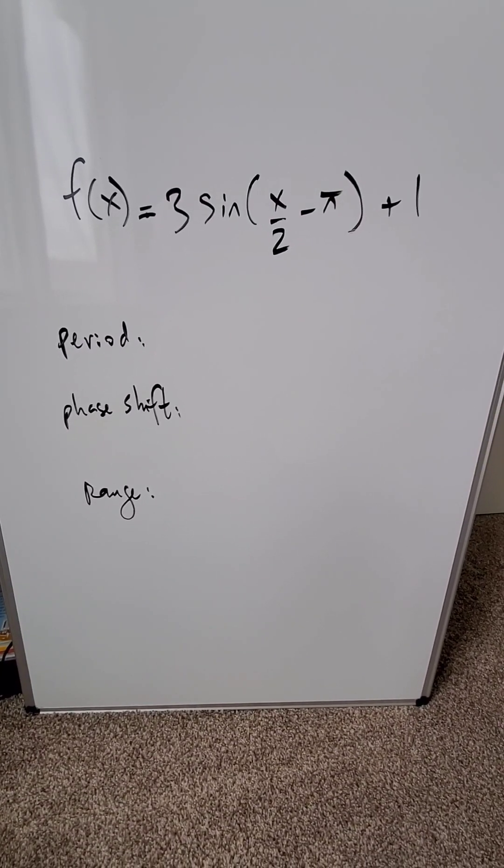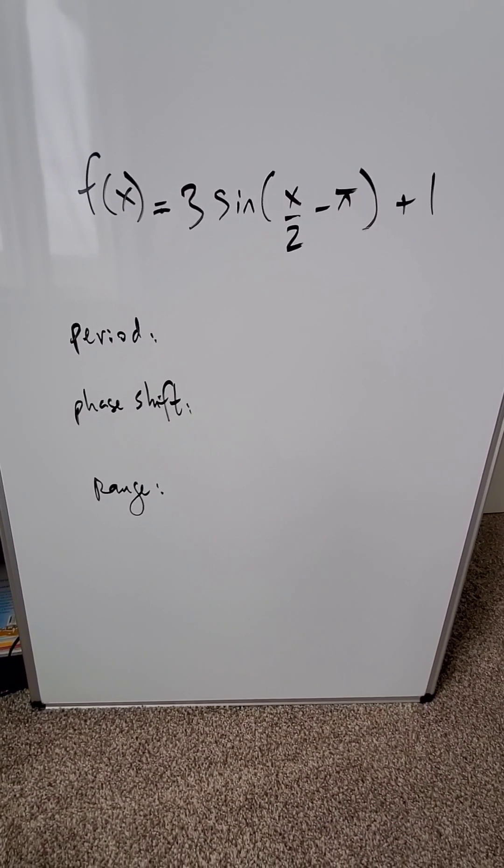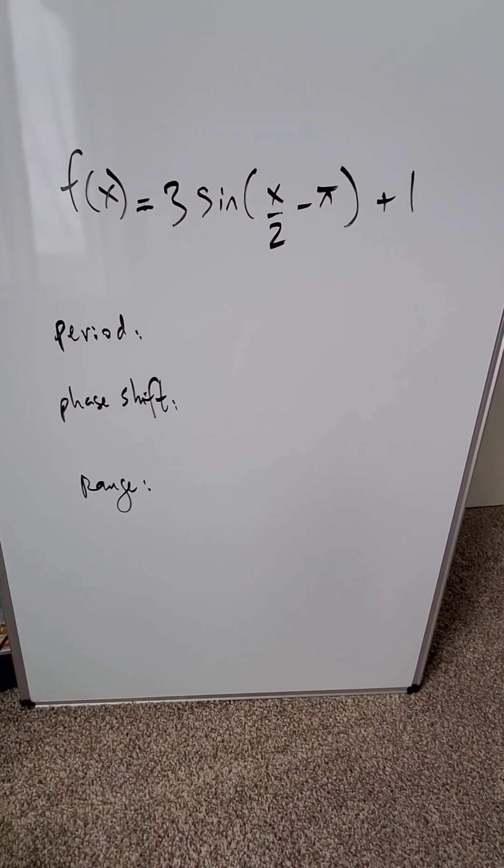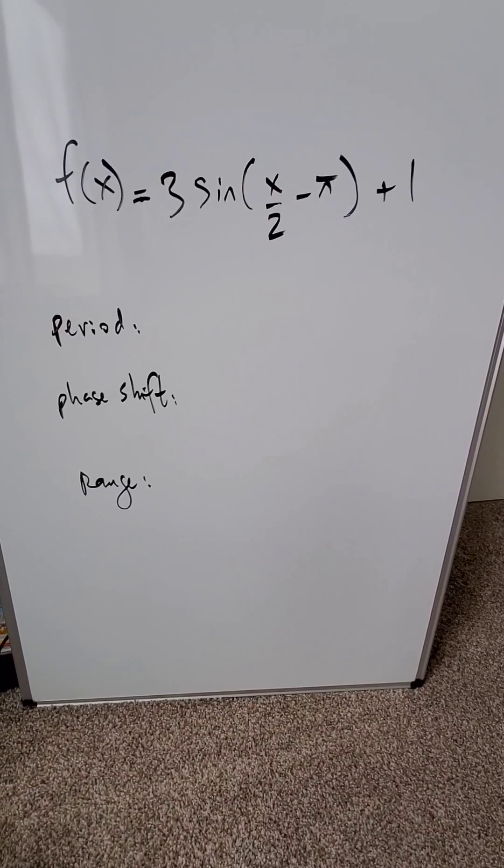Let's analyze this trigonometric function for three very important points: period, phase shift, and range. Our function is 3 sine x over 2 minus pi plus 1.